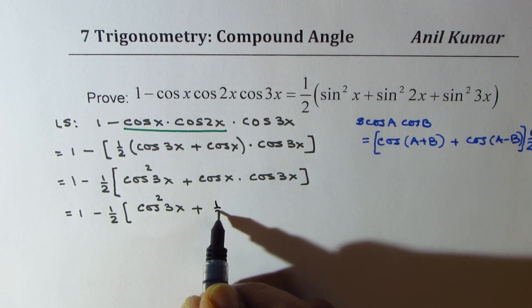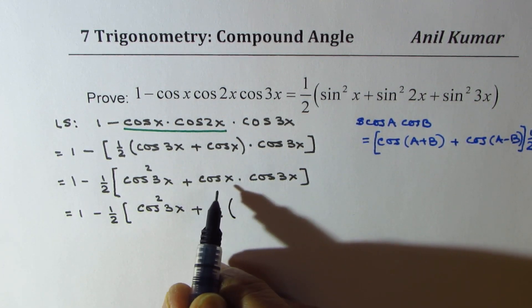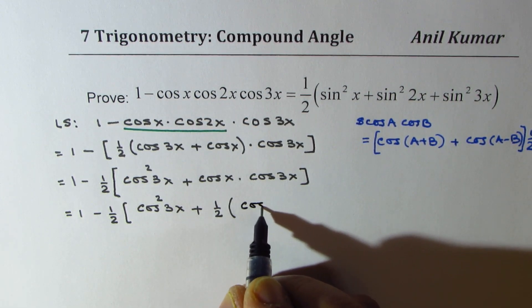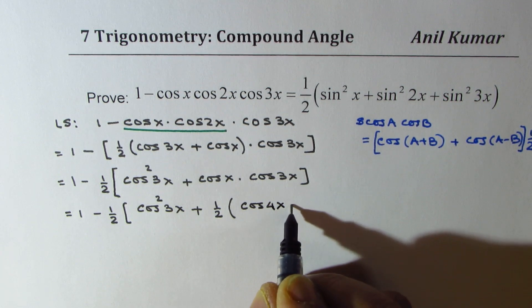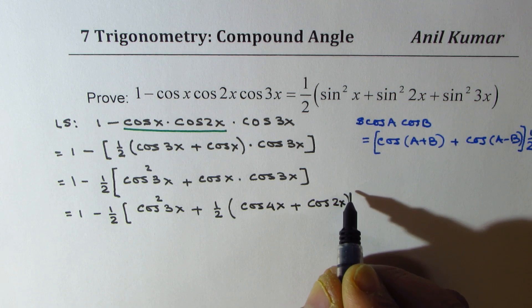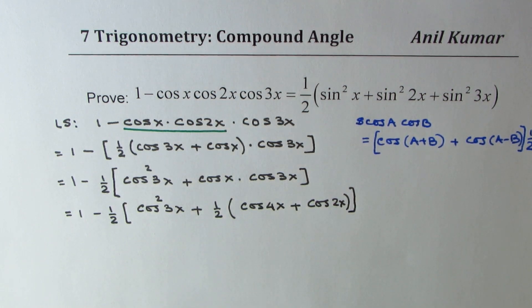x plus 3x is 4x. We get half of cos 4x plus difference, which is cos of 2x.